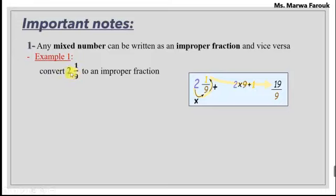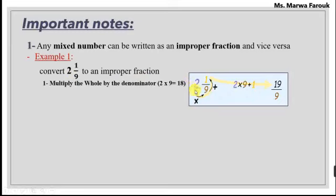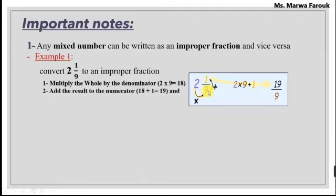Now, what I'm going to do — first step, I'm going to multiply the whole number with the denominator. 2 times 9 equals 18. Next step, I'm going to add 18 plus 1. So I'm going to make two steps: multiply then plus. 2 times 9 equals 18, and 18 plus 1 equals 19. And this 19 is the new numerator for us. So we got 19 over 9.